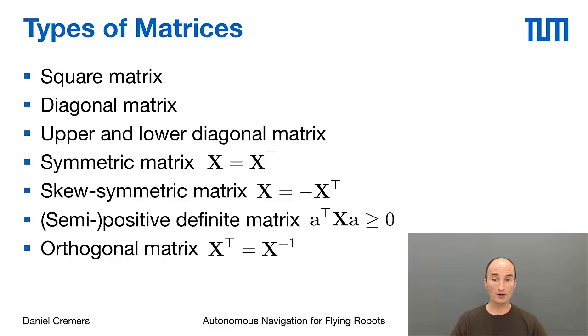We have orthogonal matrices. These are matrices where the transpose is equal to the inverse. We will see later in class that orthogonal matrices include rotation matrices, but they can also be, for example, mirroring.